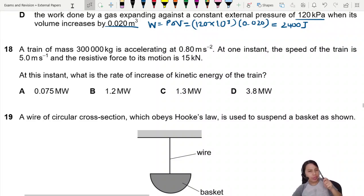This train question is a little bit tricky because there's a few forces inside here. So a train is super heavy with a certain mass, accelerating. At one instant the speed of the train is 5 m/s and got resistive force. At this instant, what is the rate of increase of kinetic energy of the train?